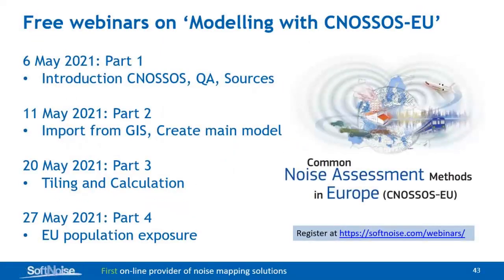This month there were four webinars. Part 1 was about the KNOSOS method, the quality assurance and the source model. Part 2 was the import from GIS and the creating of the main model — that was last week. Today we do part 3: the tiling and calculation part. And next week I will present the EU population exposure option in Predictor.